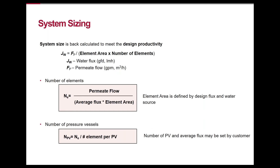Determining the proper system size depends on a few parameters which may be predetermined by an end user or implemented in the design process. Average flux, which we set based on our water type, is defined as the permeate flow divided by the total membrane area, expressed in LMH or GFD. We can use this value to determine the number of elements after selecting whether we want 400 or 440 square foot elements. The number of vessels equals the number of elements divided by the number of elements per vessel, which can be predetermined by the end user or recommended as part of the design process.